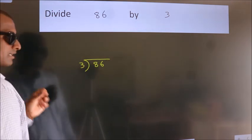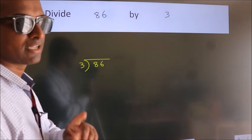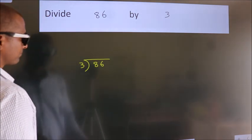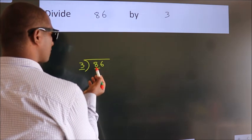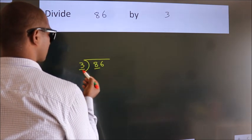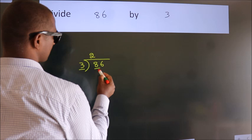This is your step 1. Next, here we have 8, here 3. A number close to 8 in 3 table is 3 2s, 6.